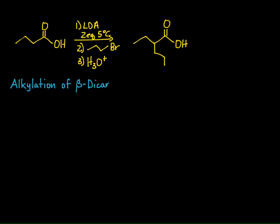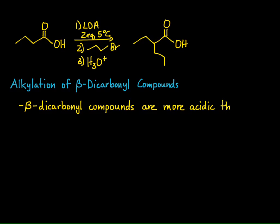Now let's move on to alkylation of beta-dicarbonyl compounds. With alkylation of ketones and aldehydes, the acidity is such that if we want to form our enolate completely, we have to use a very strong, poorly nucleophilic base like LDA. Beta-dicarbonyl compounds are quite different in that they are much more acidic than regular ketones and aldehydes, and even esters.